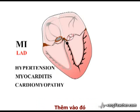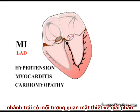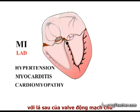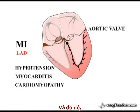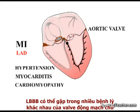In addition, during part of its course the left bundle branch has a close anatomical relationship with the non-coronary cusp of the aortic valve, and consequently left bundle branch block is seen in diverse diseases of the aortic valve.